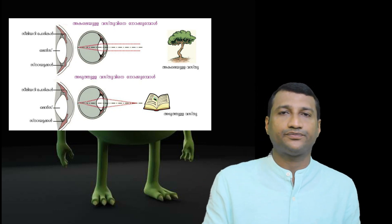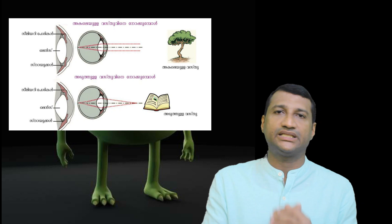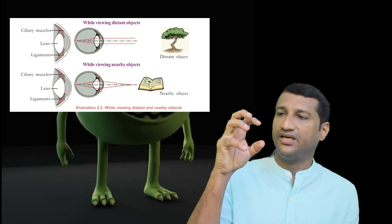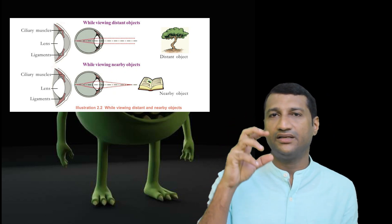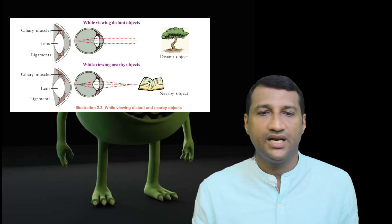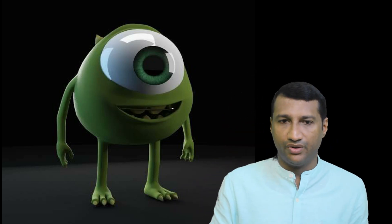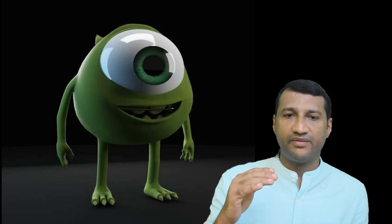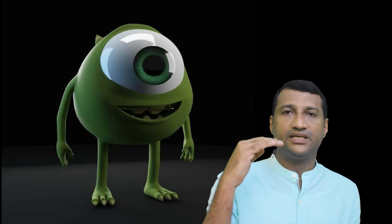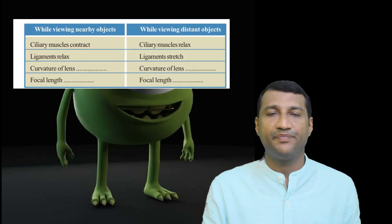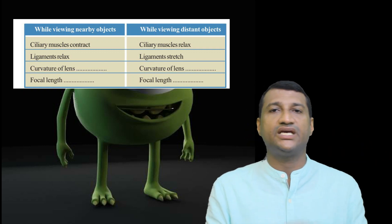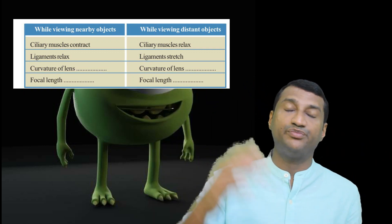I have a little technical technique to cover. While viewing nearby objects, ciliary muscles contract — they are sanghojic (contracted). That is sanghojic. The eye adjusts — the ciliary muscles contract for near objects.